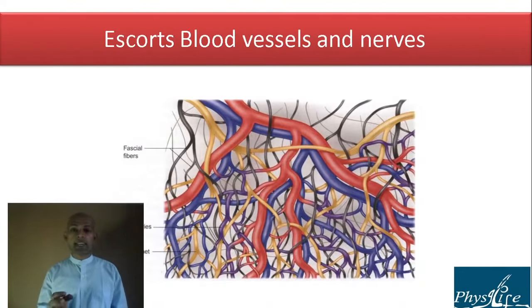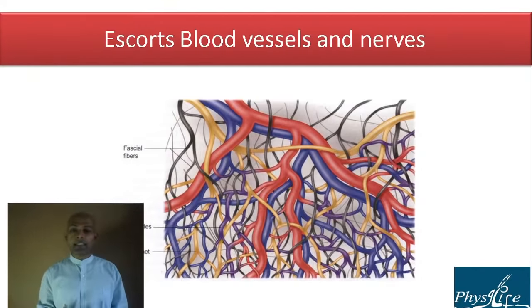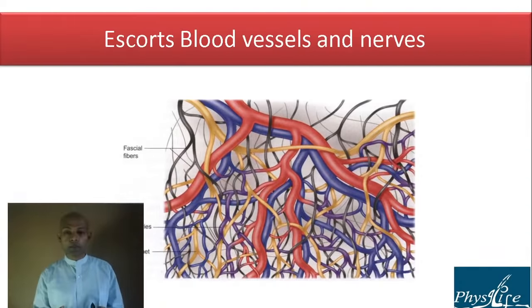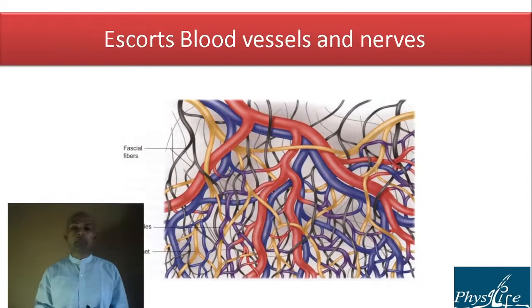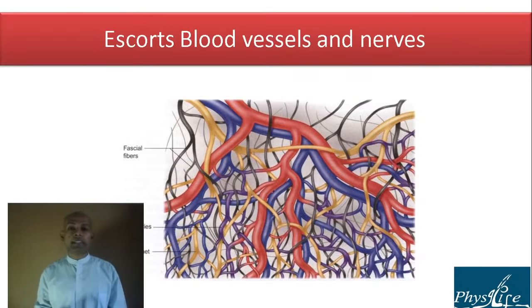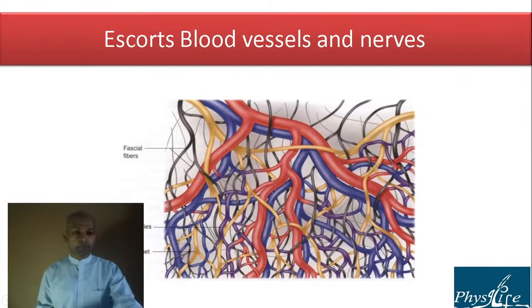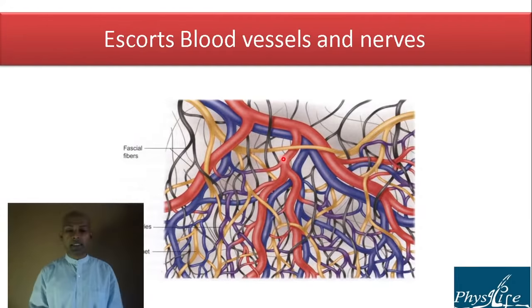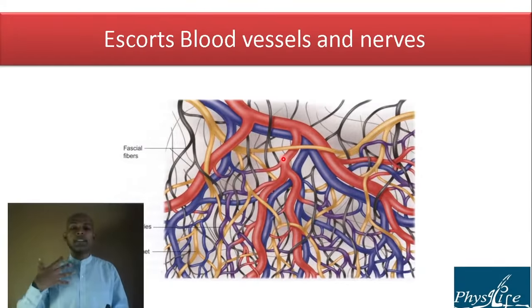Fascia also escorts blood vessels and nerves. In the picture, black fibers represent the basement membrane of fascia; red represents arteries, arterioles, venules, and veins — from artery to vein, all capillaries are held together by fascia. The neural network — represented by the blue and yellow lines — is also intertwined with the fascial fibers, held together the same way.